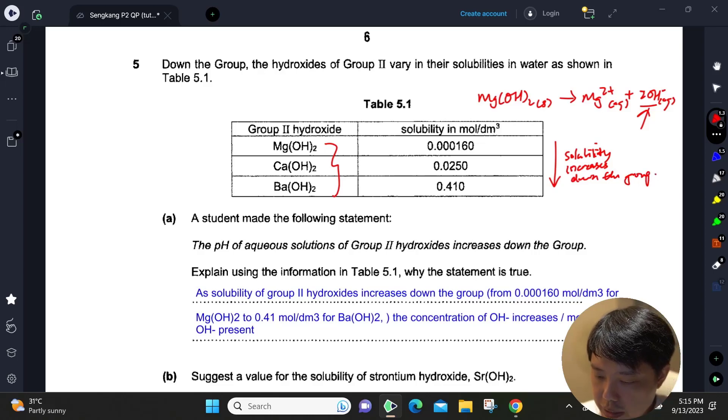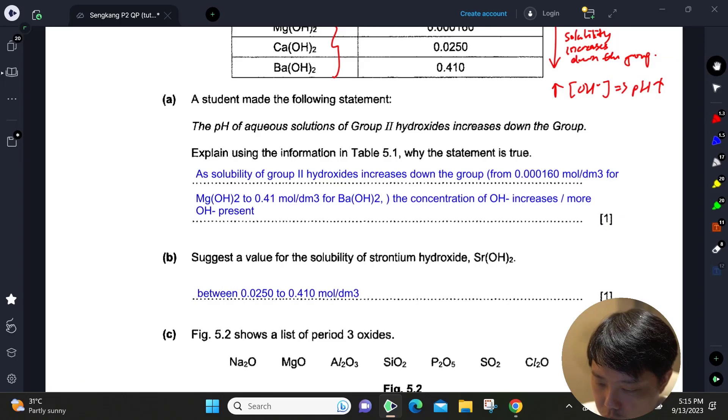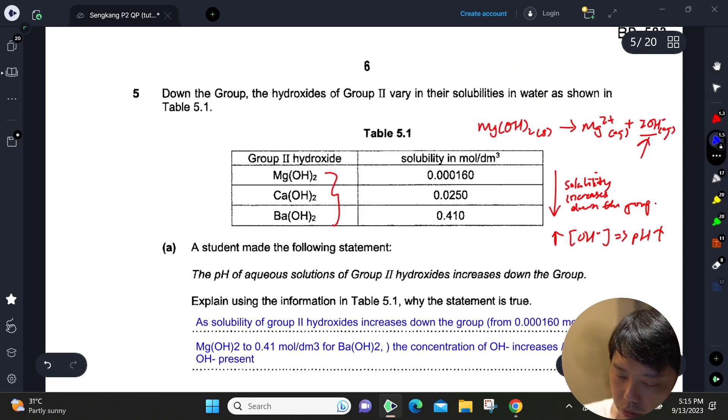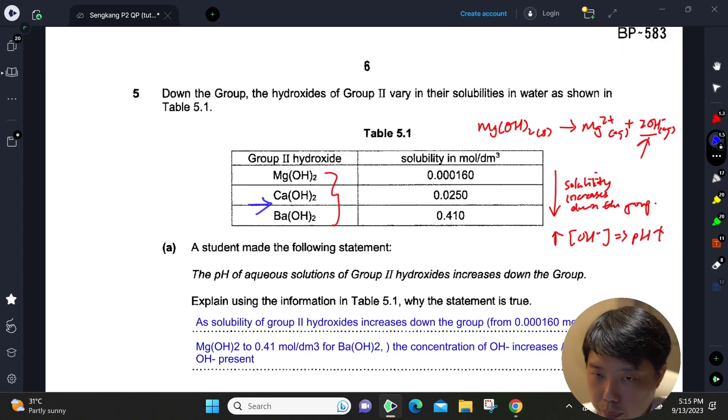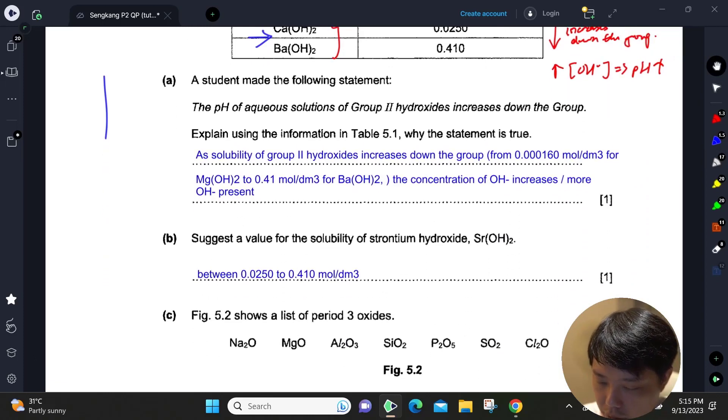Which also means that the concentration of OH⁻ will increase and the pH will also increase. For part b, suggest a value for strontium hydroxide solubility. Basically, strontium—if you check your periodic table—is actually somewhere between calcium and above barium, so you will propose a value that is between these two solubilities. Anyone will do; you can propose 0.1 or 0.2 mol per dm³.